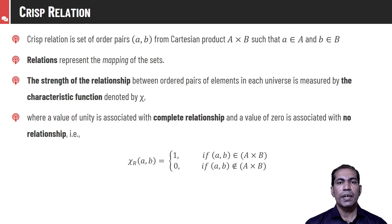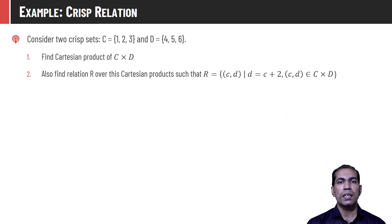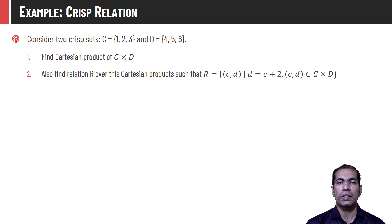We can say that if this characteristic value is 1 then there is a complete relation — it means element a is completely related with element b in that tuple. If this value is 0 it means there is no relation between the variables in that tuple. Formally, we define χ_R(a, b) = 1 if that tuple (a, b) is part of the relation, and χ_R(a, b) = 0 if the tuple is not part of the relation. Consider two crisp sets C = {1, 2, 3} and D = {4, 5, 6}.